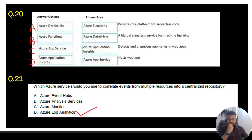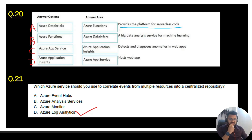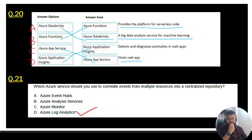Question 20 is similar to question 18 — a matching exercise. 'Provides the platform for serverless code' — Azure Functions. 'A big data analytics service for machine learning' — Azure Databricks. 'Detects and diagnoses anomalies in web apps' — Azure Application Insights. 'Hosts web apps' — Azure App Service. Use these mappings when doing this type of question in the exam.